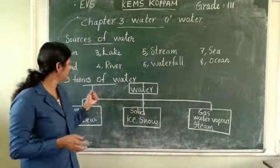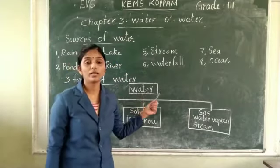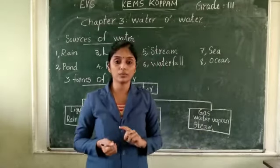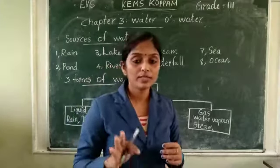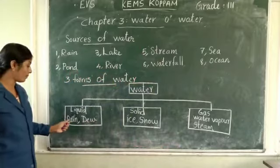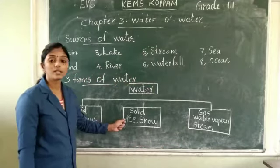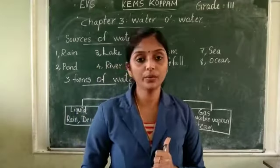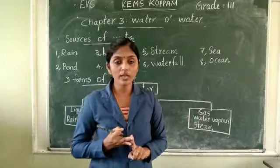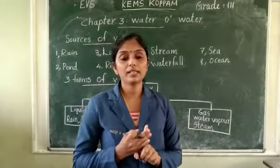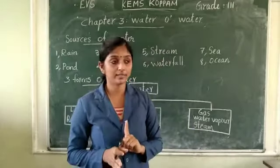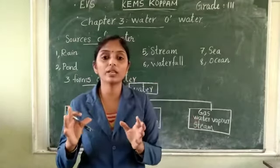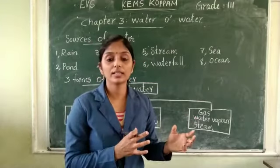Now we are discussing the three forms of water. We can see water in three forms: liquid form, solid form, and gas form. For liquid, I will give you some examples — tea, coffee, juice, oils. These are some examples of liquid things.